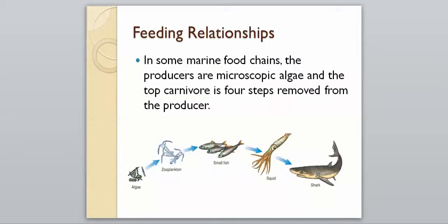In the marine food chain example, the producers are microscopic algae, and the top carnivore is four steps removed from the producer. We have algae, and you can see the arrow always points to where the energy is going. Since the zooplankton are eating the algae, the arrow points from the algae towards the zooplankton. Then the zooplankton are eaten by the small fish, the small fish are eaten by the squid, and then the squid is eaten by the shark. Nothing is going to eat the shark because it is the top dog, the biggest one in this food chain.